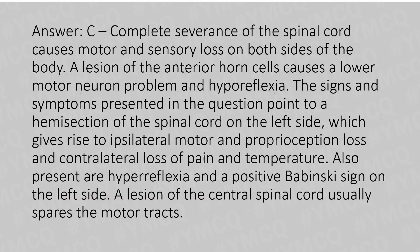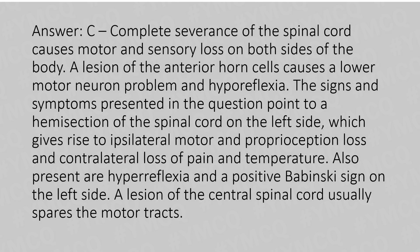Complete severance of the spinal cord causes motor and sensory loss on both sides of the body. A lesion of the anterior horn cells causes a lower motor neuron problem and hyporeflexia. The signs and symptoms in this question point to hemisection of the spinal cord on the left side, which gives rise to ipsilateral motor and proprioception loss and contralateral loss of pain and temperature. Also present are hyperreflexia and a positive Babinski sign on the left side. A lesion of the central spinal cord usually spares the motor tract.